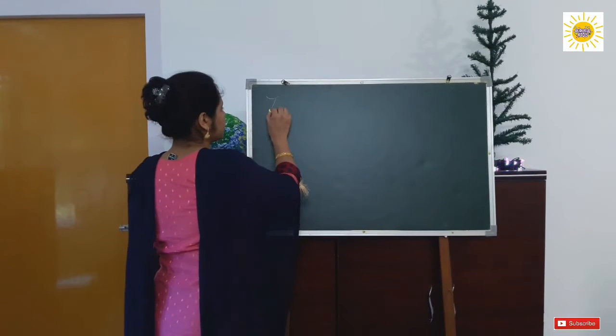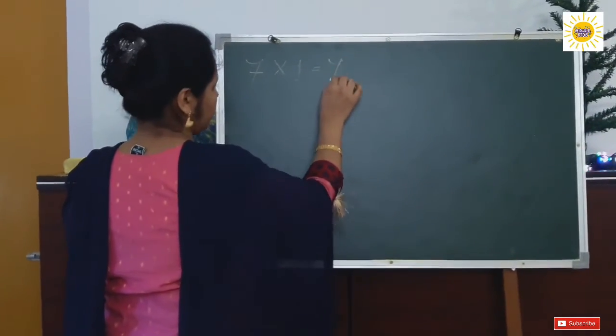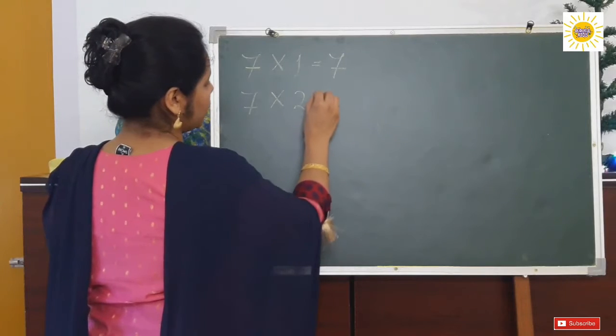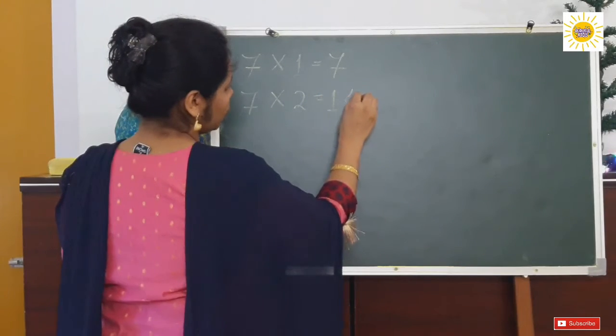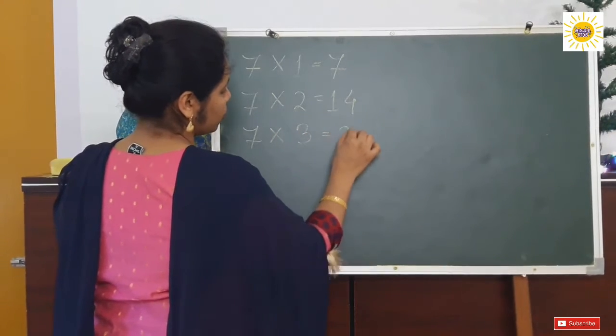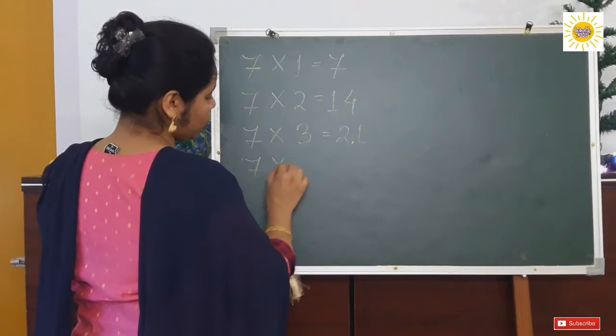7 into 1 equals to 7. 7 into 2 equals to 14. 7 into 3 equals to 21. 7 into 4 equals to 28.